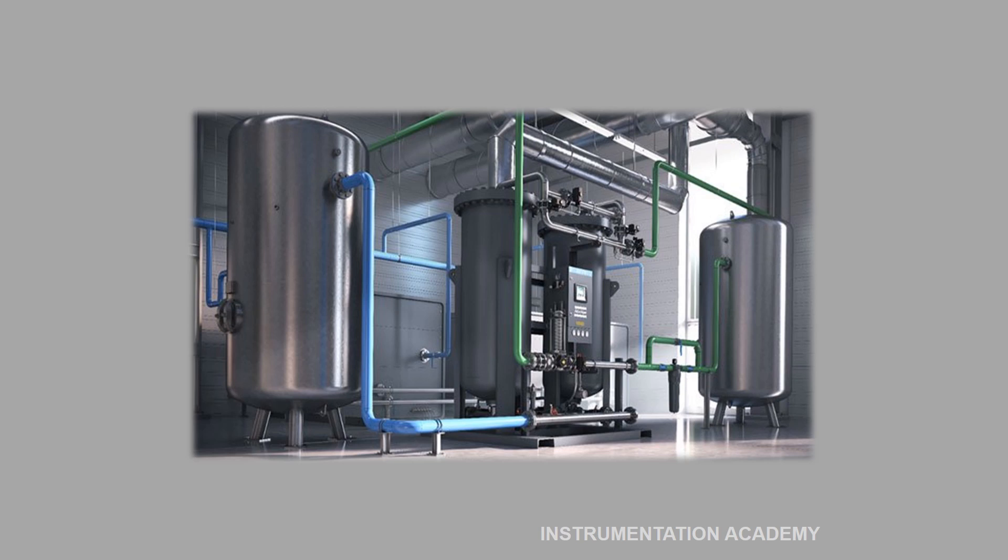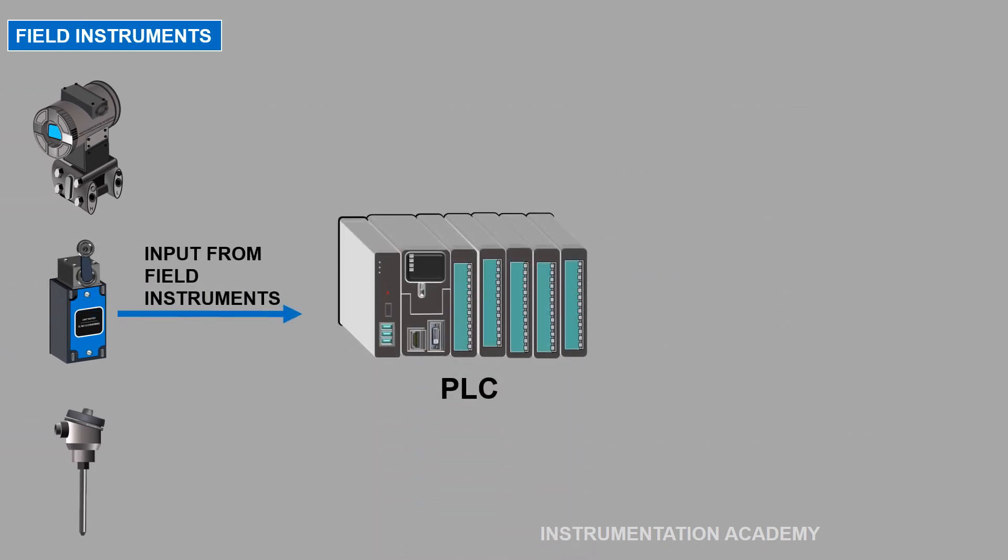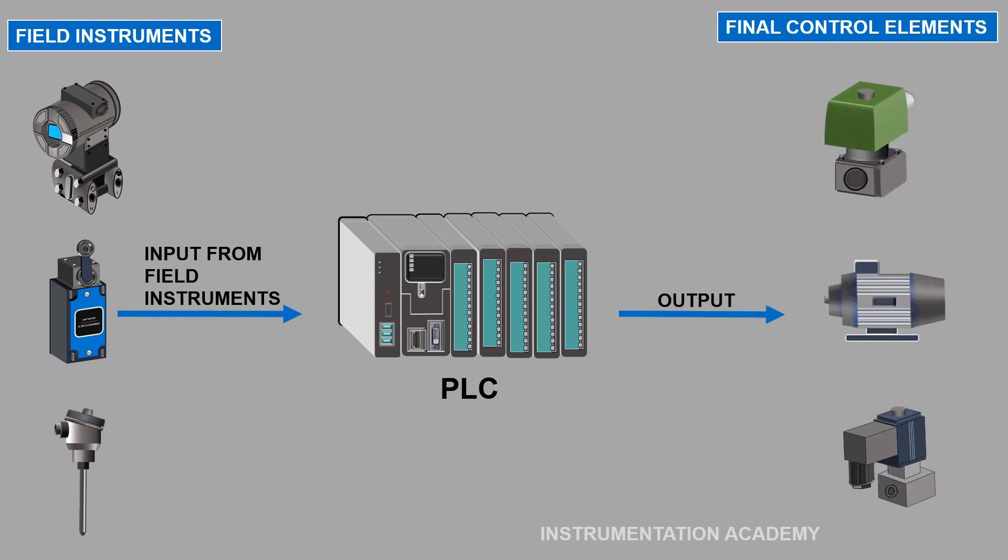In a process plant, industrial automation is carried out by transmitting signals from field instruments and sensors to a controller like PLC, and these signals will be interpreted by the controller. Based on this received signal, the controller would issue a command signal to a final control element like a valve so that the intended process can be controlled.